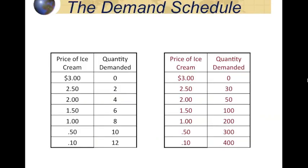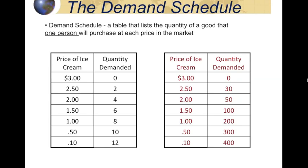So let's point out a couple of different ideas reflective of the demand concept. You can see in front of you a table — we actually refer to these as schedules. Like a class schedule has the class, teacher, time, and classroom, this demand schedule has the price of the product and the quantity demanded at all those given price points. At high prices, Homer will buy very little; at low prices, he'll buy a lot.